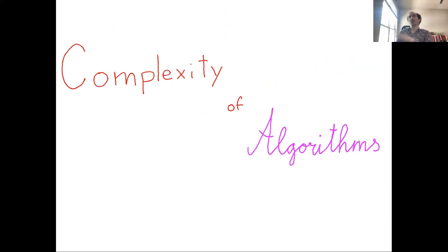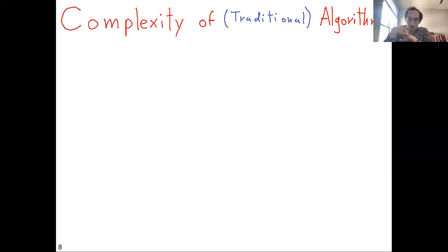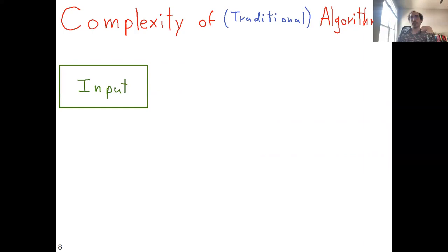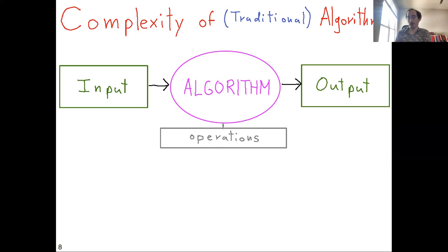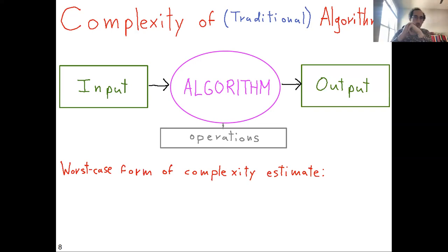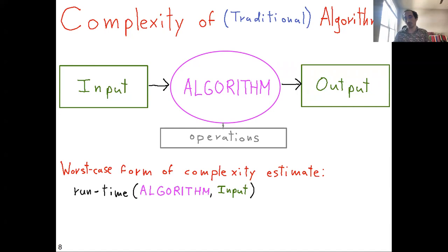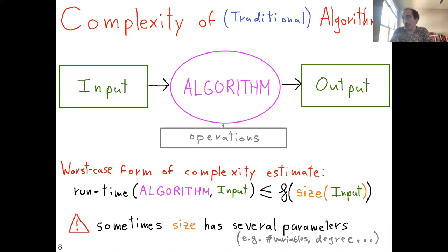Let's focus on the complexity of algorithms. In the traditional setting, we have some input, we want to solve a problem with it, we develop an algorithm, and obtain an output. Usually in introductory algorithms courses, we do a worst-case complexity estimate: we look at the runtime of the algorithm on an input and bound it exclusively in terms of the size of the input. This is pessimistic in the sense that we bound all inputs of a given size by the same bound.